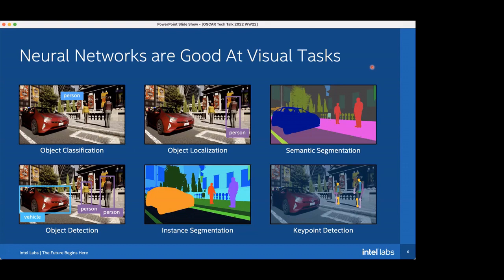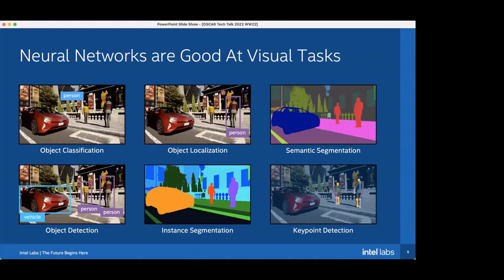We have something like object classification, where the goal is to say which object is in the image — you can imagine this is like a pedestrian detector. Or you could try localizing that object, giving a bounding box around it. With object detection you can detect all objects in the image, for example two people and a vehicle. Then there are dense tasks like semantic segmentation, where color represents a particular class — blue is the vehicle, red is people.